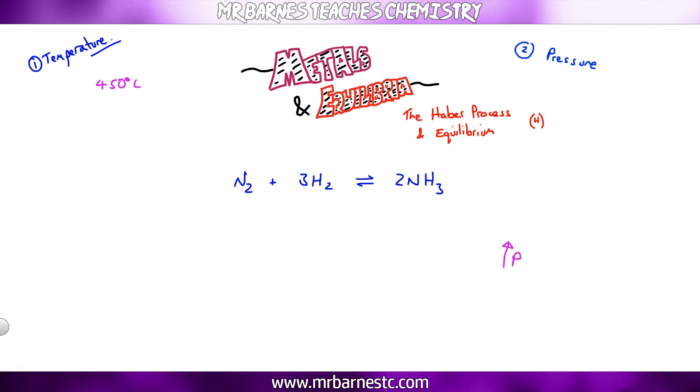The second main condition is increasing the pressure. Now if you increase the pressure it will always favour the side with the least molecules. So what you need to be able to do is look at any reaction and work out how many molecules you have on the left and on the right. So on the left here I've got one nitrogen molecule and I've got three hydrogen molecules. So in total I have four molecules on the left. On the right I have two molecules.